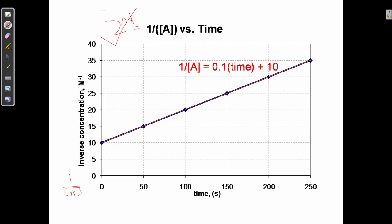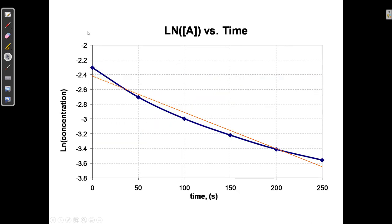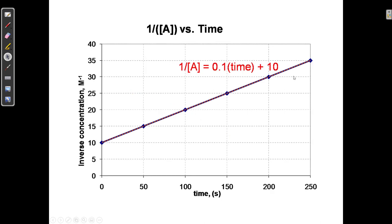This is a lot of work. In order to determine whether a reaction is zero, first, or second-order using this graphical method, I have to make three graphs. I make the first graph — is it a straight line? No, so it's not zero-order. I make the second graph — is it a straight line? No, so it's not first-order. Finally, I make the third graph — is it a straight line? Yes, so the reaction is second-order.